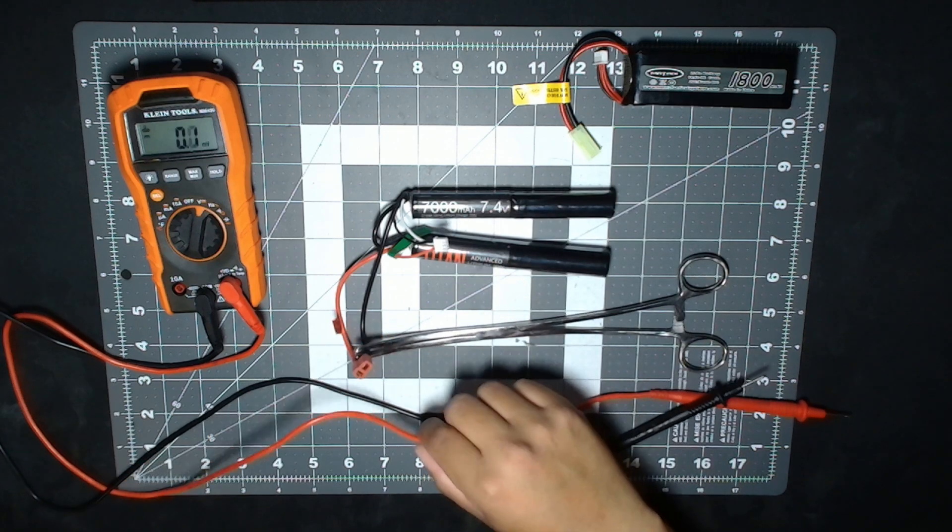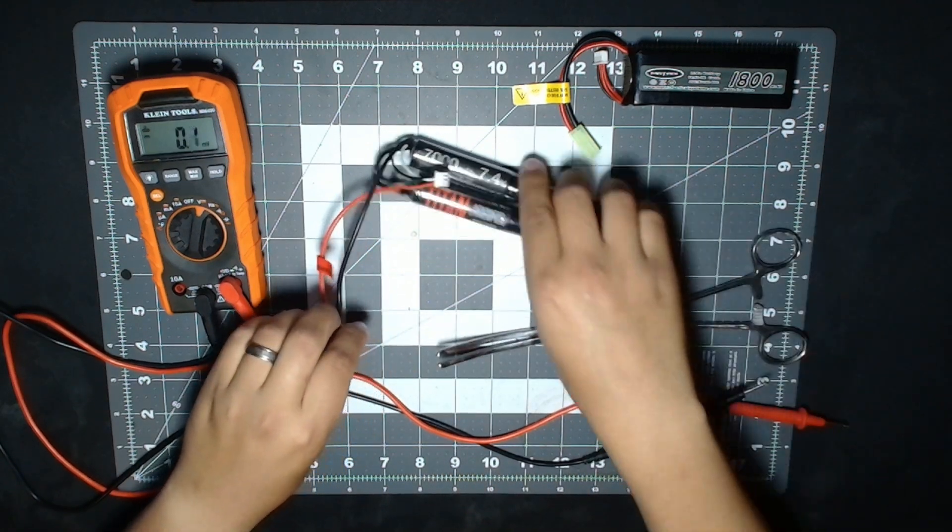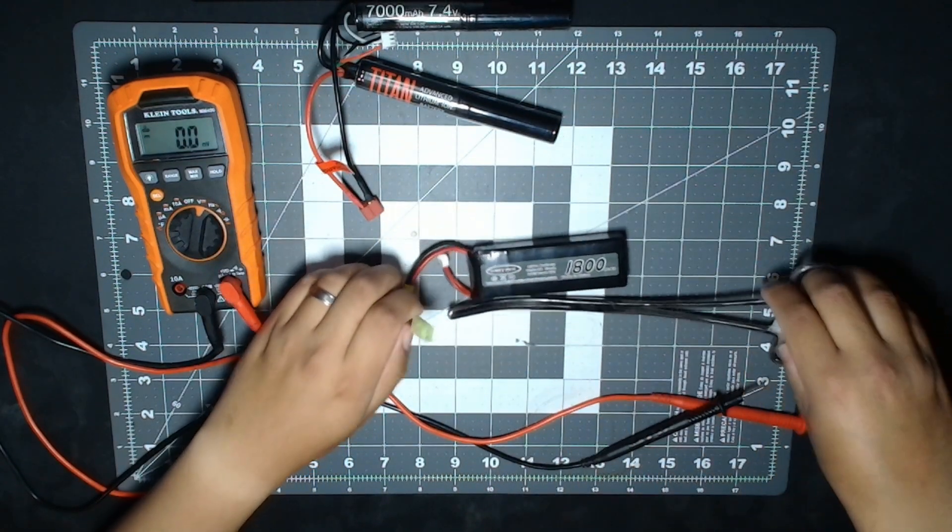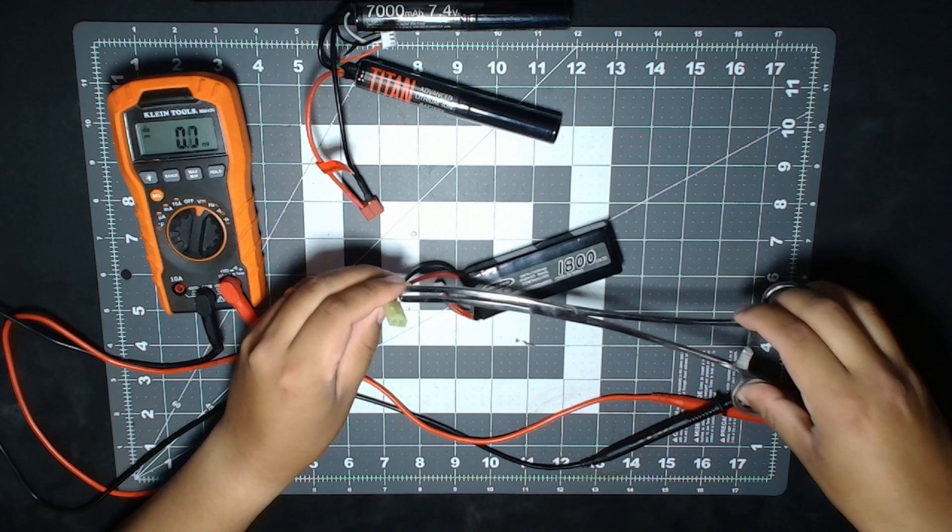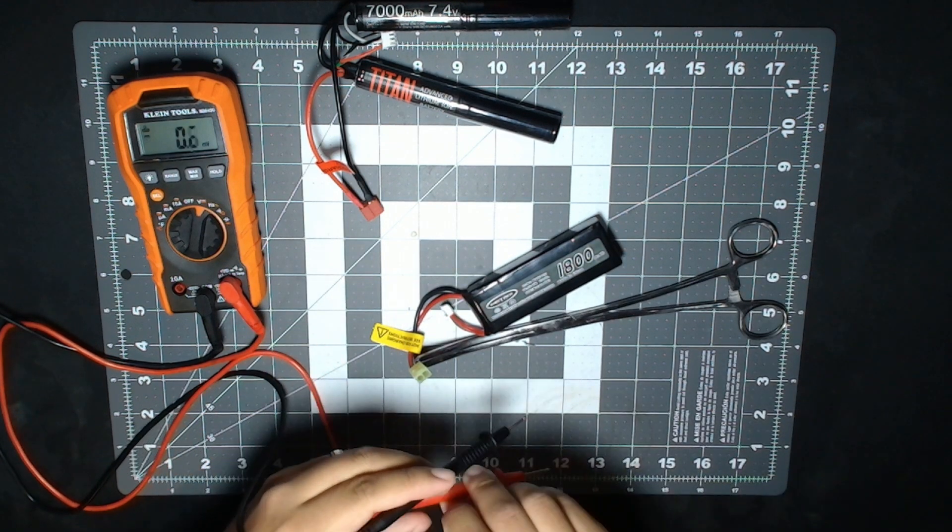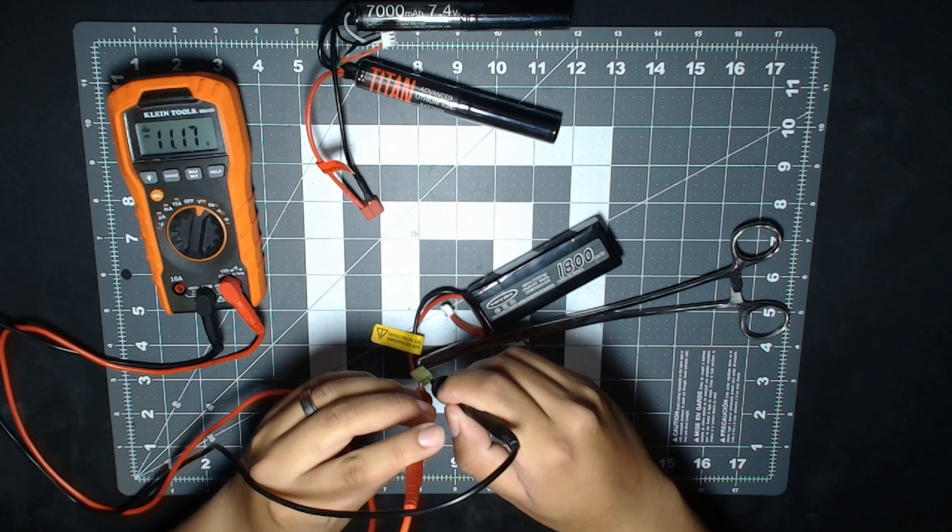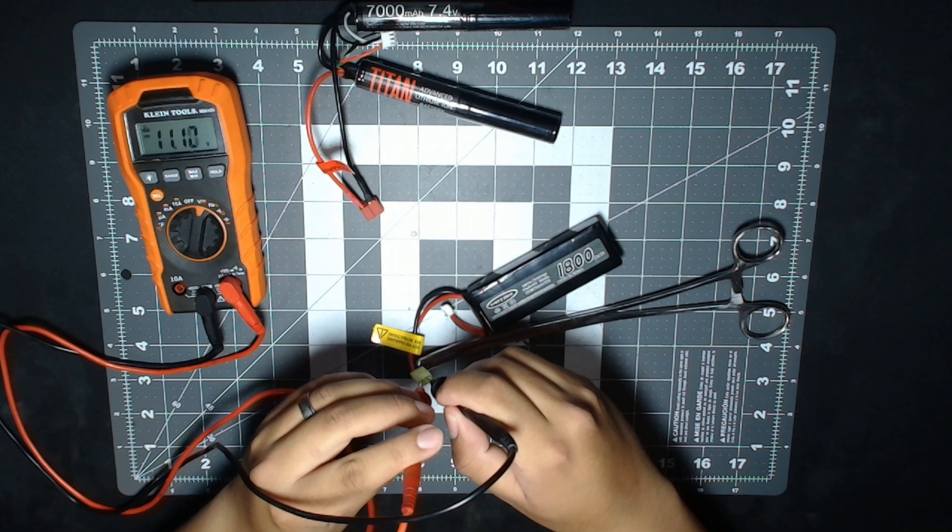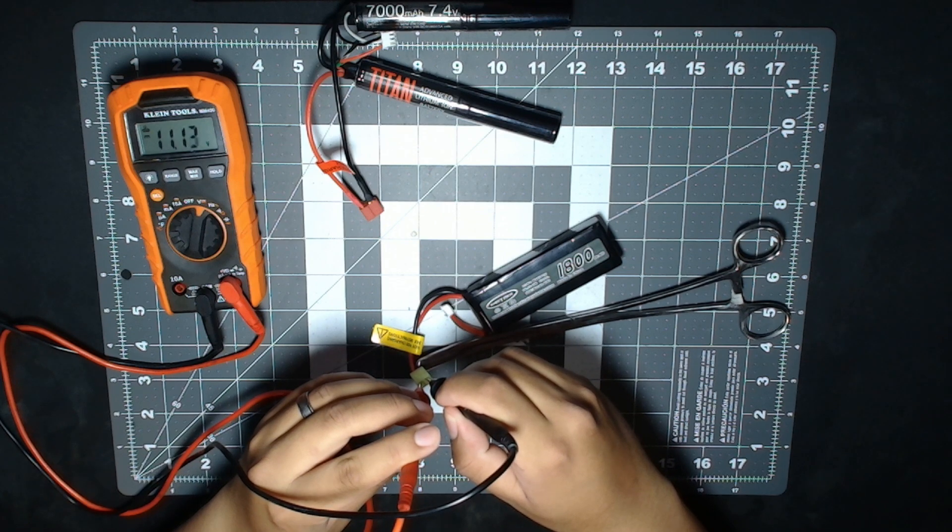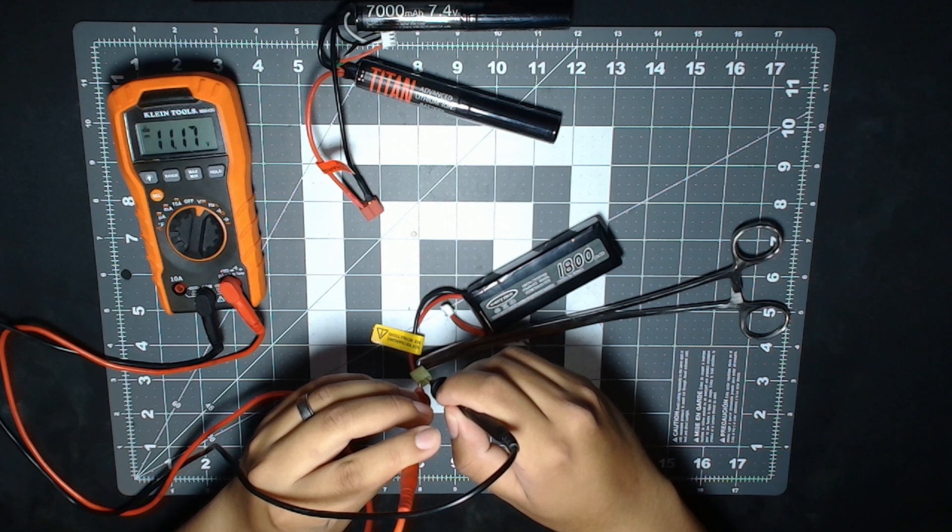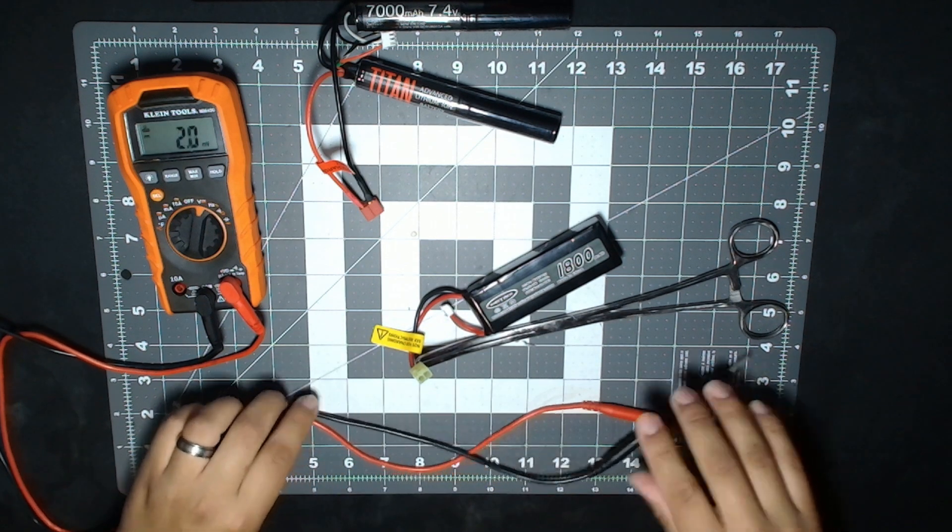Now with the 11.1V, do the same thing: make sure to do the red with the red, black with the black. This is getting 11.17 volts, which is also going to be low. I haven't charged these batteries, I'm just using them as an example.